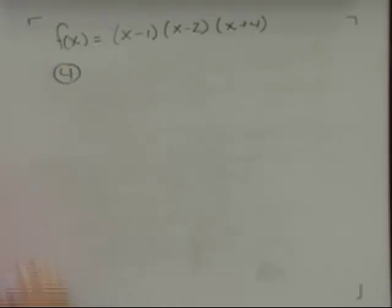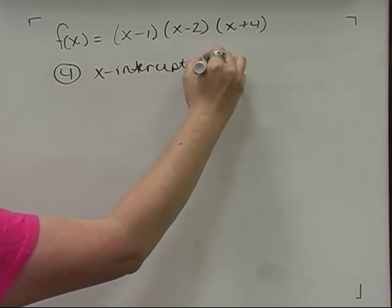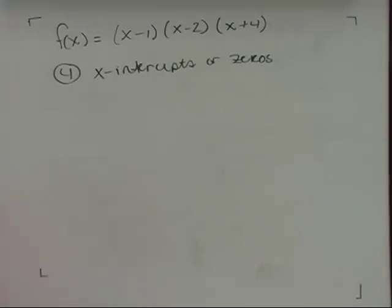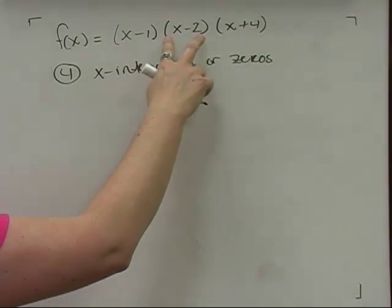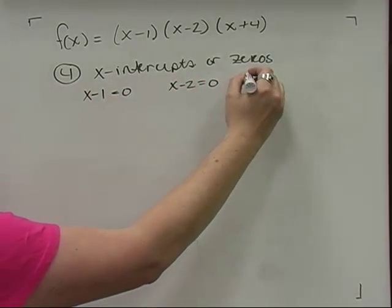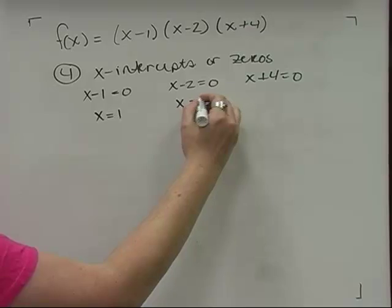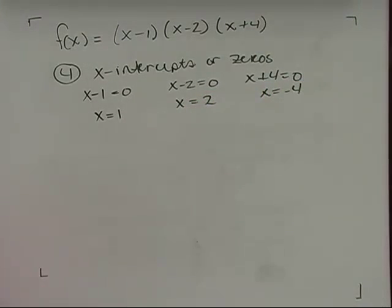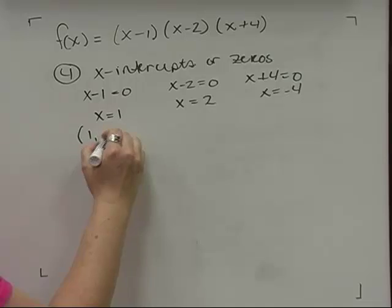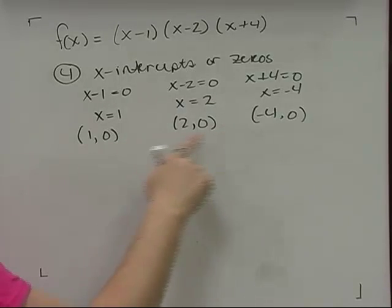Step 4 is finding the x-intercepts, or zeros of the polynomial. We set each factor equal to zero: x − 1 = 0 gives x = 1; x − 2 = 0 gives x = 2; x + 4 = 0 gives x = −4. These are the x-intercepts: (1, 0), (2, 0), and (−4, 0).